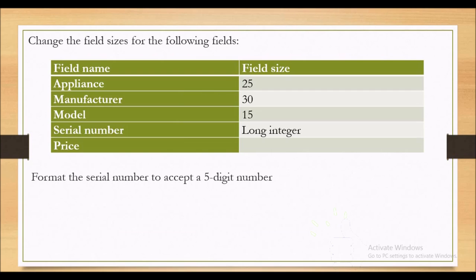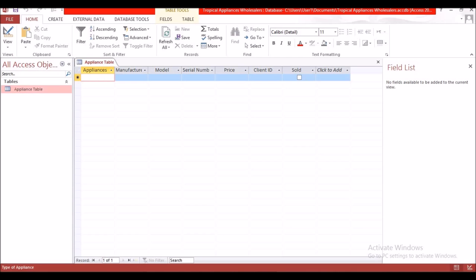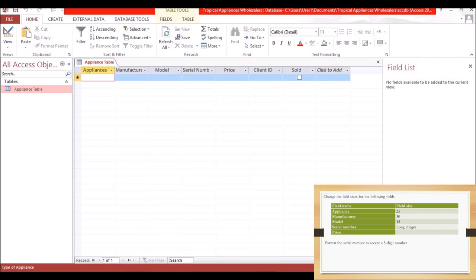The next part says to change the field sizes of the following fields: Appliance should be 25, Manufacturer should be 30, Model should be 15, and Serial Number should be Long Integer. We leave Price as is. We are also to format the Serial Number to accept only five digits. Let's go back to Design View to do that.